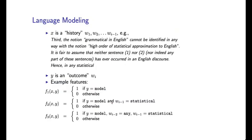That's all rather abstract. Let's go through a particular example illustrating these definitions. Back to language modeling. Each x is a history, w1 through wi-1, for example, this portion here. Each y is an outcome. For example, wi might be model. It could be any word in the vocabulary. Here are some example features.